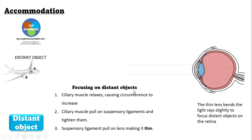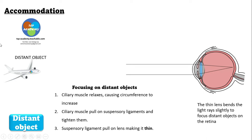Looking at a distant object, the lens will again change as the ciliary muscle changes. Looking at an airplane in the distance — far away — the ciliary muscle will relax, causing the circumference to increase. The ciliary muscle will pull on the suspensory ligament to tighten it. As a result, the lens will become thin, allowing the image from the distant object to fall on the retina.